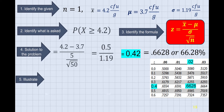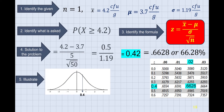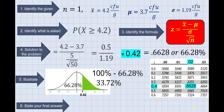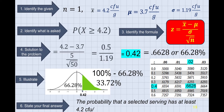Illustrating using the normal curve, we have 0.42. We find the area greater than 0.42. The value of less than 0.42 is 66.28%. Since we are finding greater than 4.2 and the total area of a normal curve is 100%, we subtract 66.28% from 100%, which is equal to 33.72%. So the final answer: the probability that the selected serving has at least 4.2 colony-forming units per gram of salmonella is 33.72%.